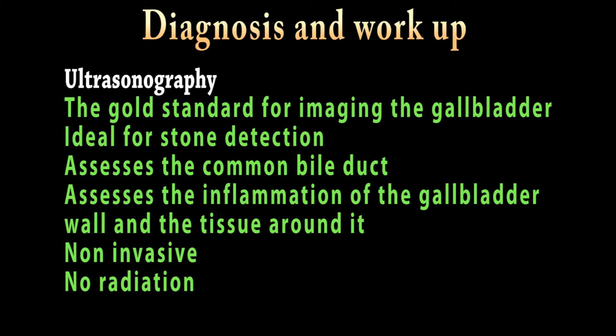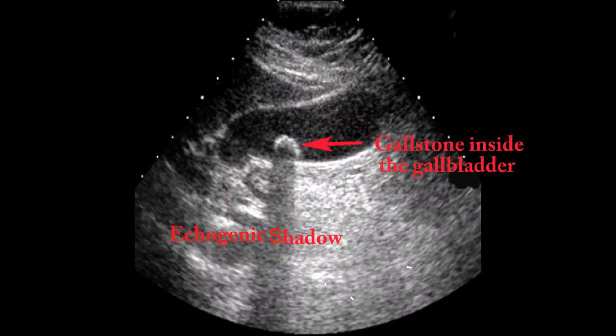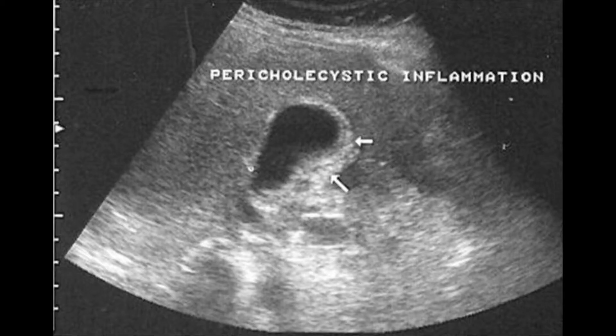Ultrasonography is the gold standard for imaging the gallbladder. It is ideal for stone detection, can assess the common bile duct and inflammation around the gallbladder, and is non-invasive and does not involve radiation. This is an ultrasonographic image showing a gallstone inside the gallbladder, and this is another image showing inflammation around the gallbladder and thickening of the gallbladder wall.